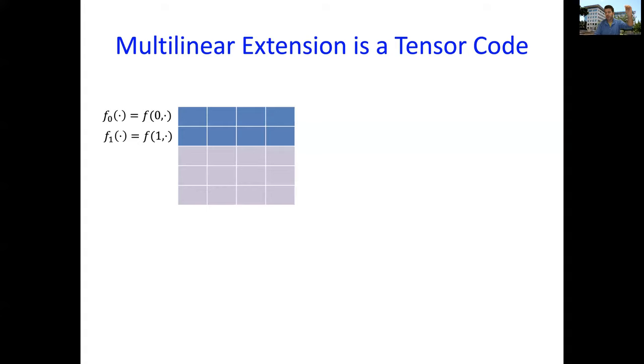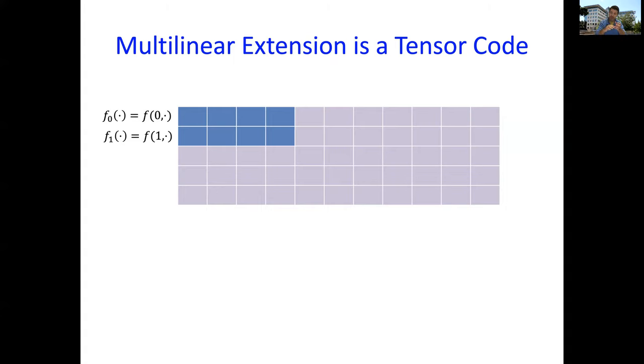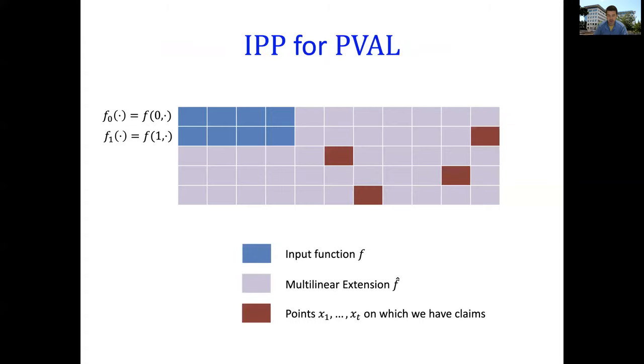One way to view the multilinear extension of f is as follows. What you do is you first interpolate these two rows to get, you interpolate each column individually. Each column you are only interpolating on two points, you got a degree 1 polynomial. Now what you do is you go for each one of the rows and interpolate that. You interpolate that as a multivariate polynomial. So really what you're doing is you're taking the n minus one dimensional multilinear extension of each one of the rows. That's one way to view the multilinear extension. It's going to be useful for us.